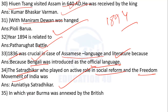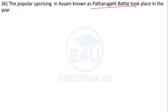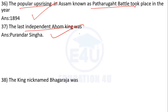When did the British annex Burma? The answer is 1826 — the Treaty of Yandabo. The Patharughat popular uprising occurred in 1894 in Assam.